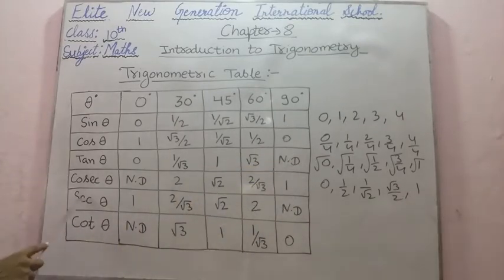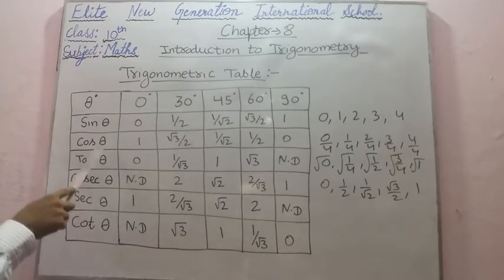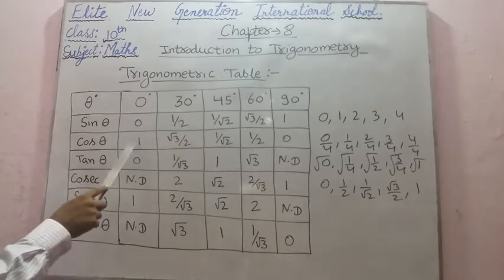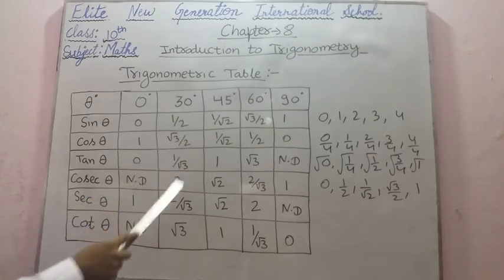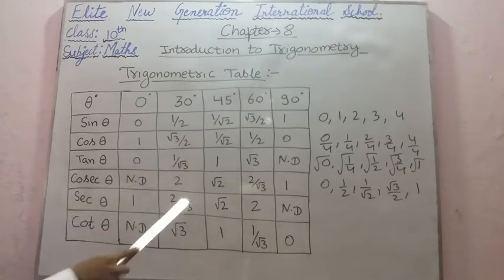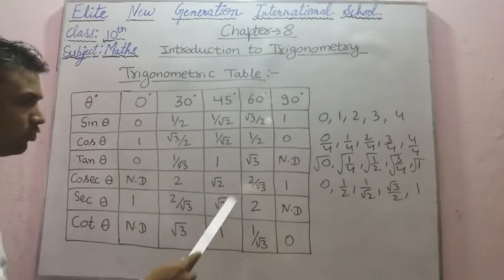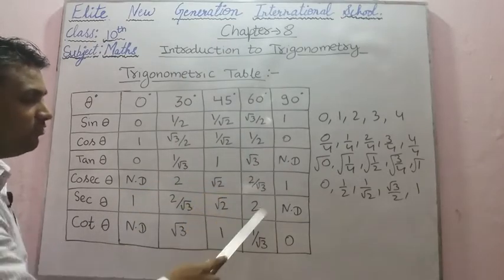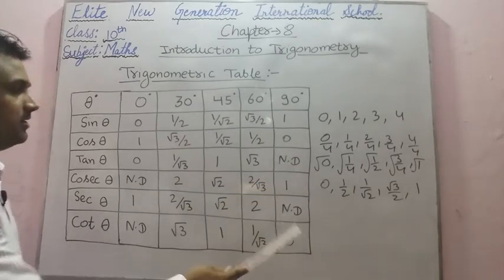For sec theta, it is the reciprocal of cos theta. So: reciprocal of 1 is 1; reciprocal of √3/2 is 2/√3; reciprocal of 1/√2 is √2; reciprocal of 1/2 is 2; and reciprocal of 0 is not defined.